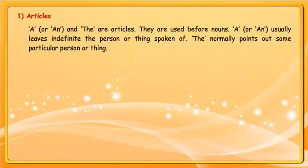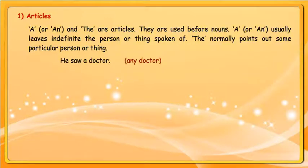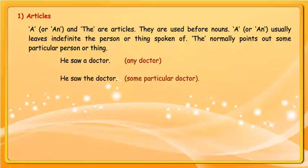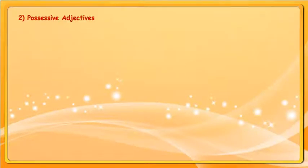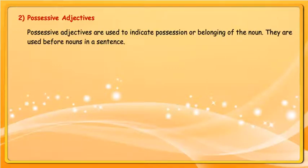Articles: A or an and the are articles. They are used before nouns. A or an usually leaves the person or thing spoken of indefinite. The normally points out some particular person or thing. For example: 'He saw a doctor' means any doctor, while 'He saw the doctor' means some particular doctor.